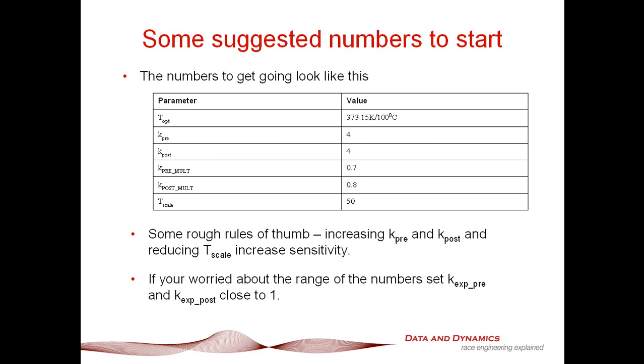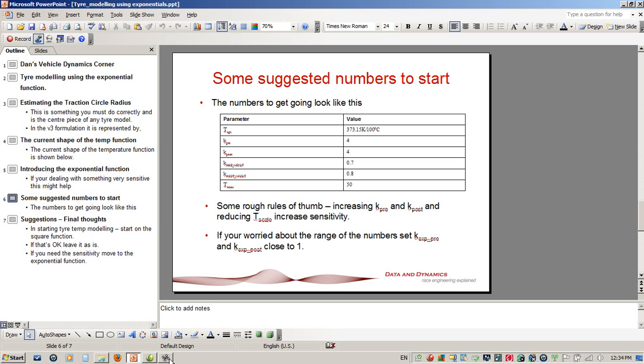If you are worried a little bit about what this is going to do, what I would suggest is you start off with conservative values of k exponential pre and k exponential post. Set these pretty close to one, rough rule of thumb about 0.8. That just makes sure that it's not going to go massively stupid. Now, what's the mechanics of how we actually input this into ChassisSim? That's actually pretty straightforward.